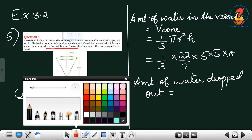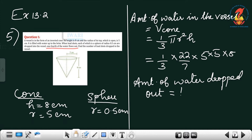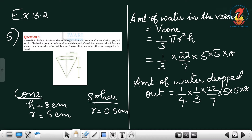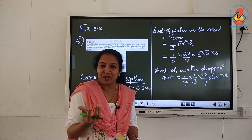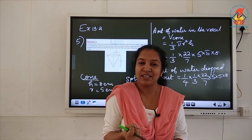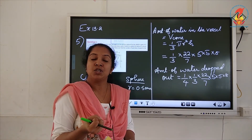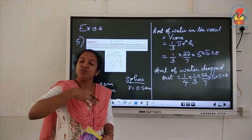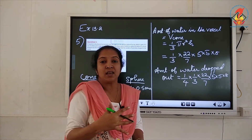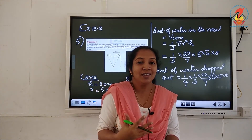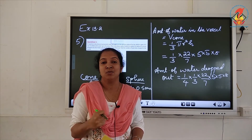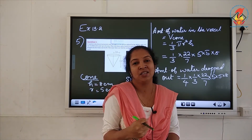The amount of water that flows out is equal to (1/4) × (1/3) × (22/7) × 5 × 5 × 8. We have to find the number of lead shots. The amount of water that flows out is equal to the volume of the object immersed in the water, using Archimedes' principle.